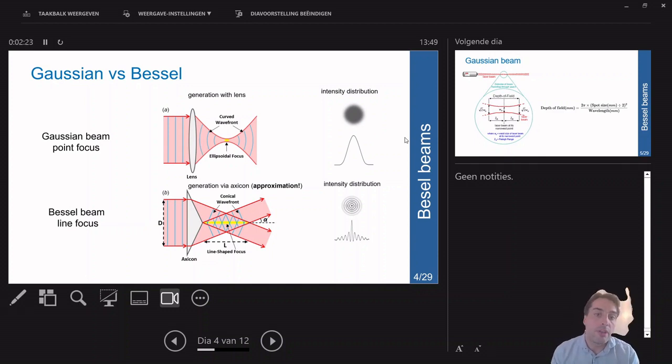You can elongate your focal length, for instance, with axicons where the focus is along a line. Along this line, you have an intensity distribution where you also see rings, so you have a longer focal length or focal depth.